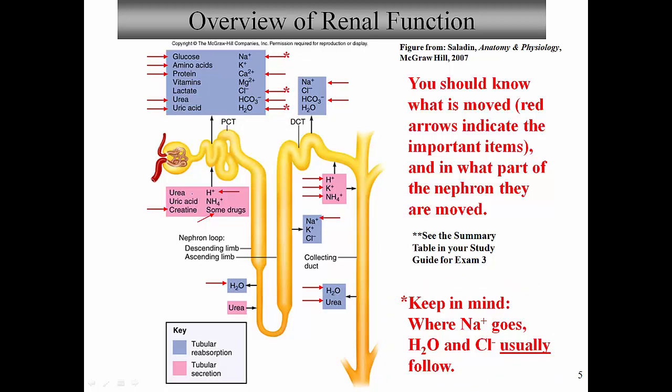Looking at secretion in the PCT, substances like creatinine, some drugs, and very importantly hydrogen ion are secreted into the tubule. This is a great way to get rid of excess acid — hydrogen ion is moved from the blood into the tubules, then excreted in the urine.